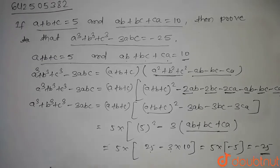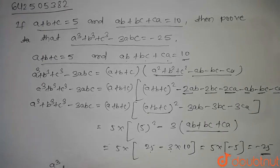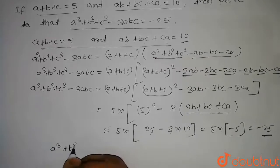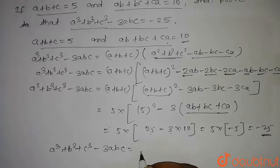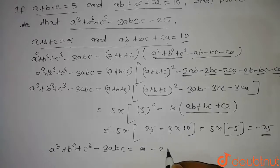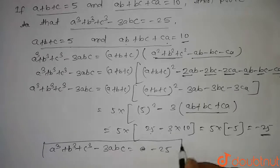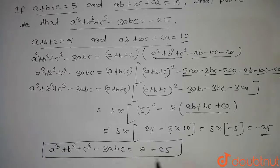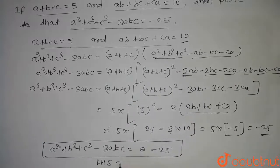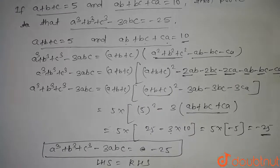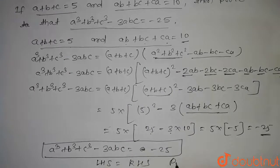Hence, a³ plus b³ plus c³ minus 3abc is equal to minus 25. This is our answer and we have proved that LHS equals RHS. Hence proved. Thank you.